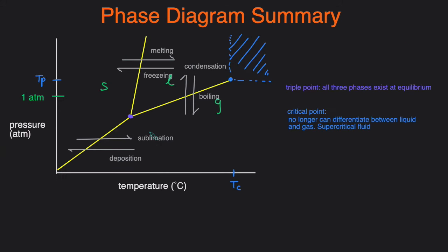That's how you read a phase diagram. Phase diagrams help you determine what phase a substance will be at a particular temperature and pressure combination. You also need to know the triple point, the critical point, and all the phase changes that can occur.